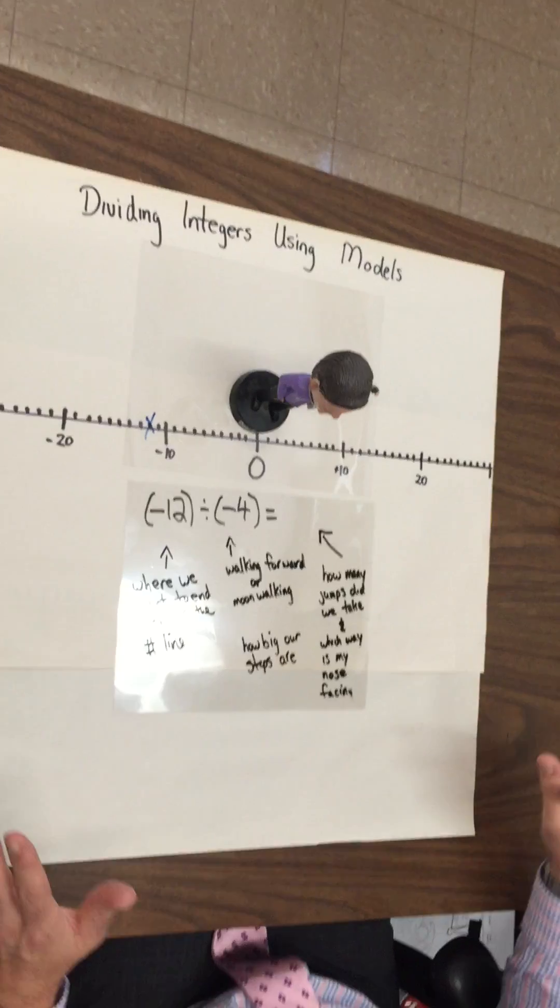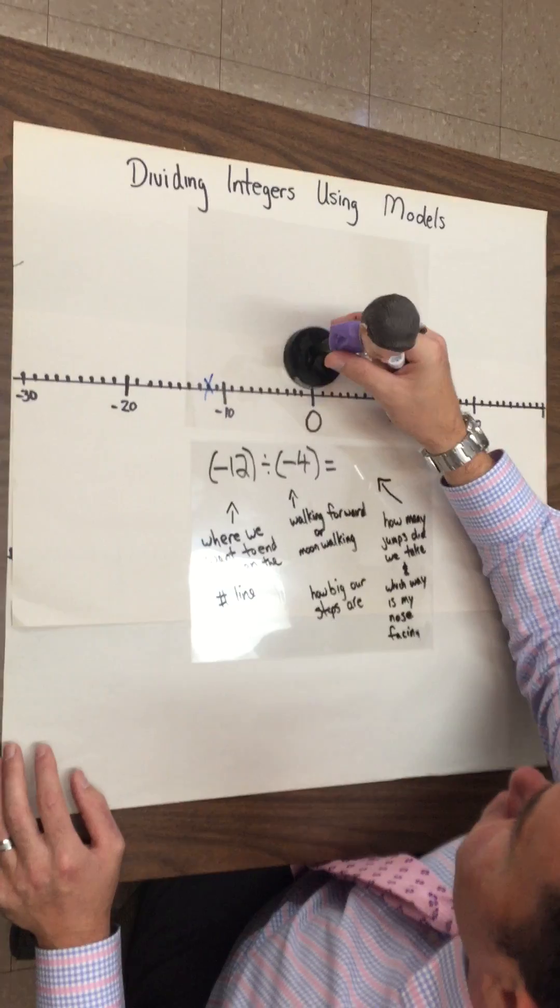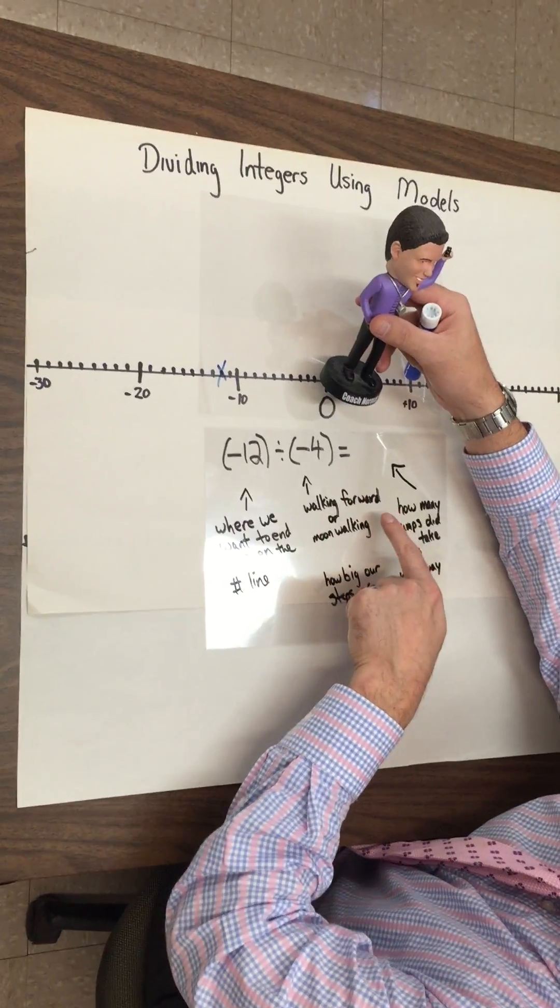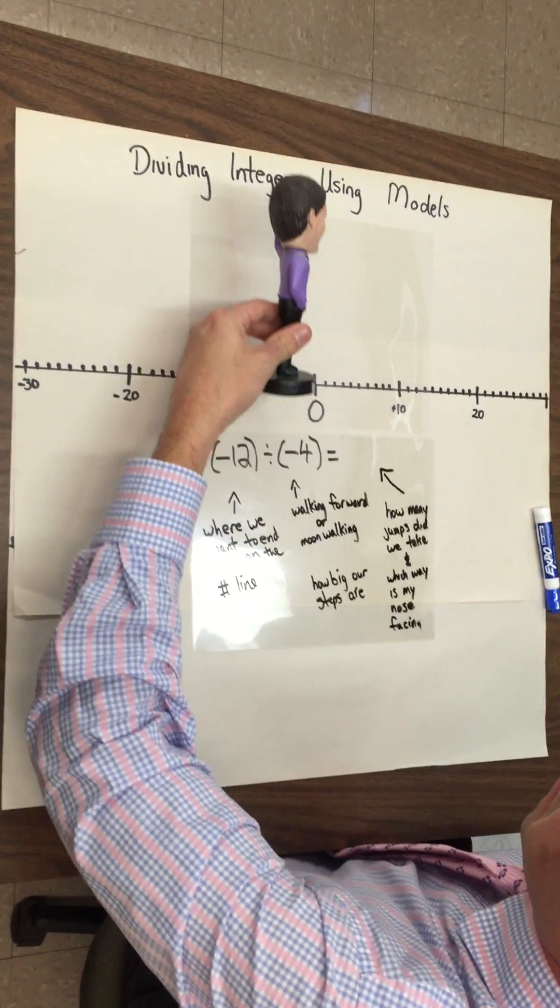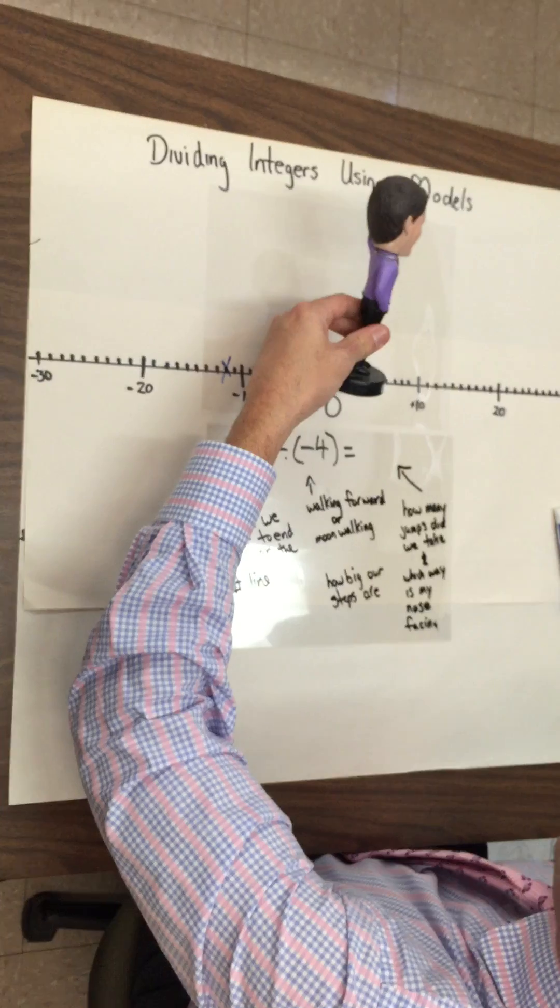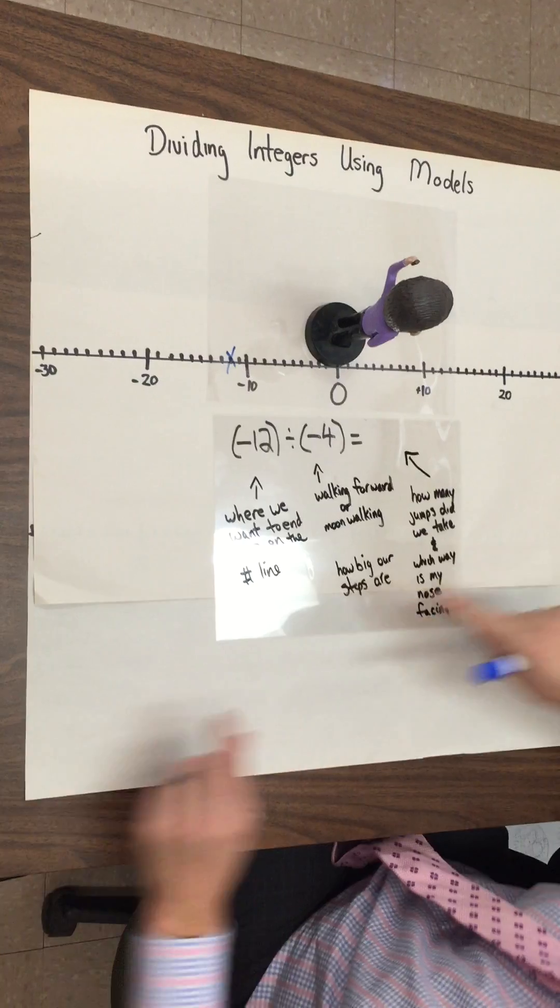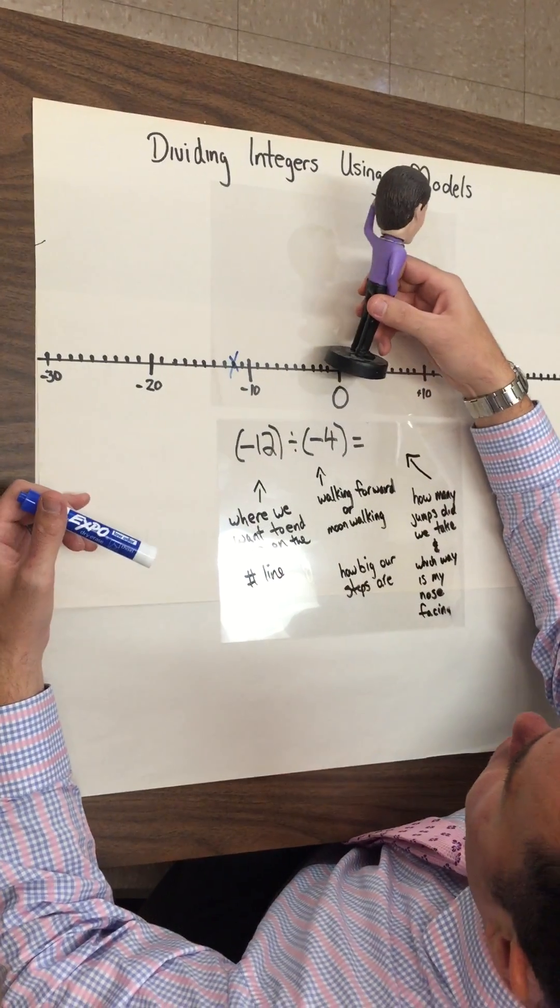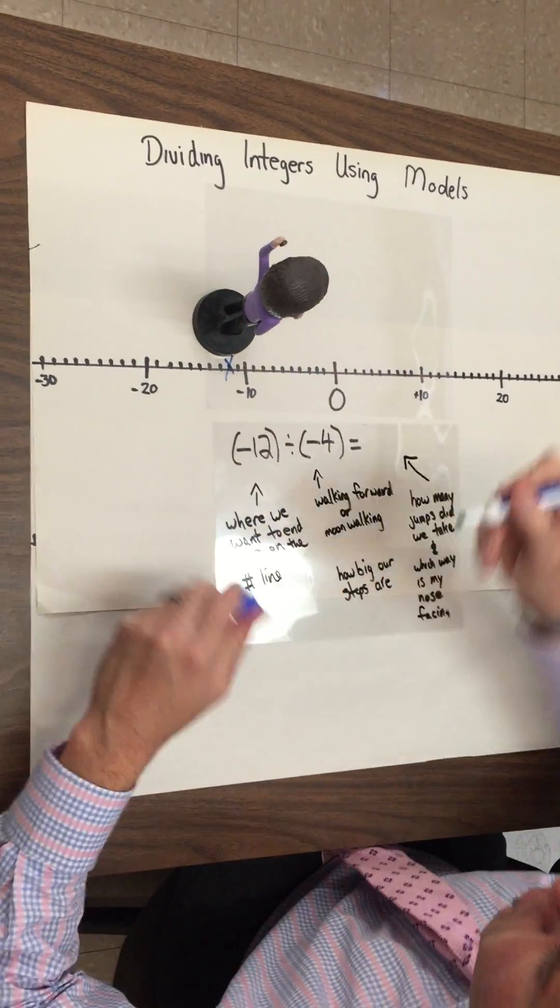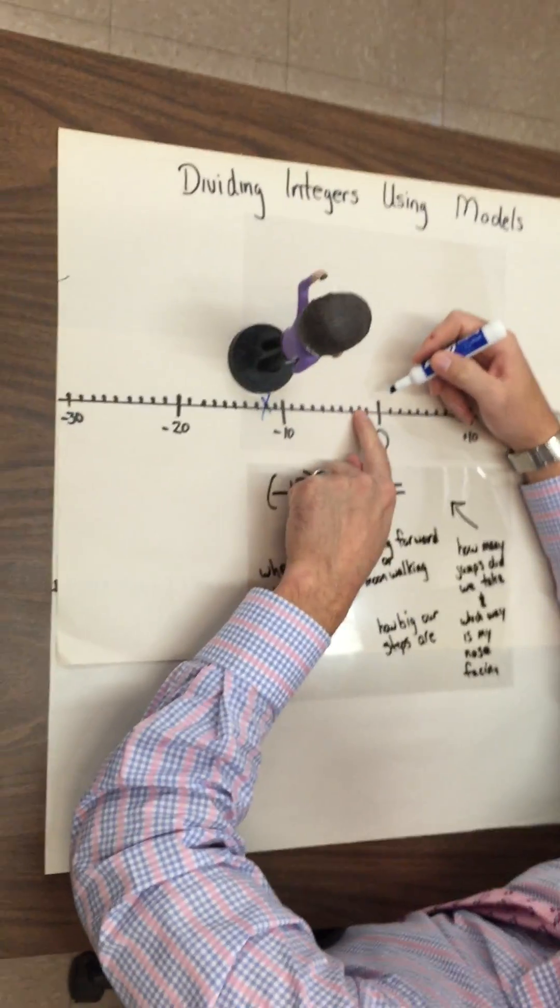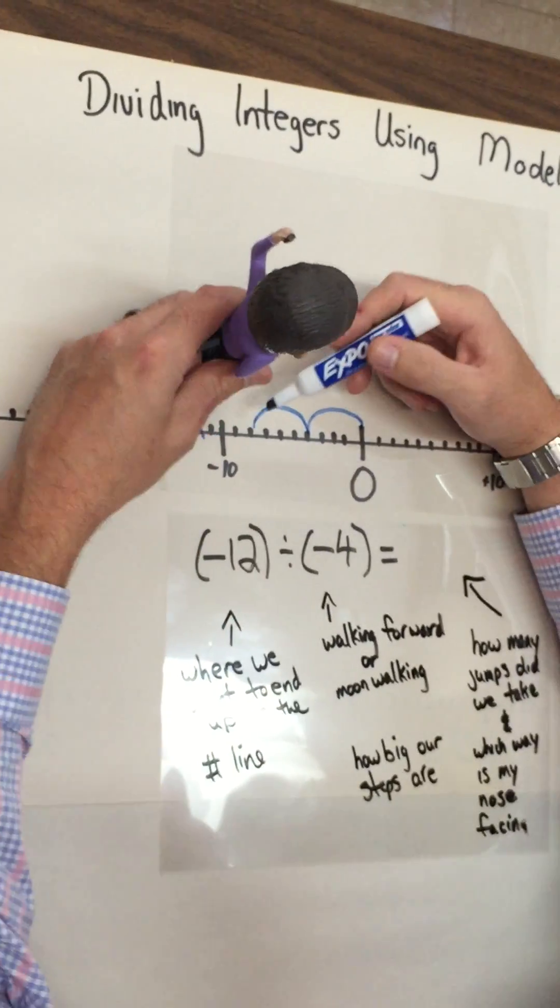Now the second number. This time the sign changed. So this tells me I'm going to start. It's a negative sign. So instead of walking forward, this time I am going to moonwalk. You get the idea, right? So I'm going to face this way because I'm moonwalking. The second number tells me how big our steps are. So I'm going to go four big each time as I moonwalk. And I end up here. So I'll use my blue marker to go one, two, three, four, end up right there. One, two, three, four, end up there. And my final jump is right here.